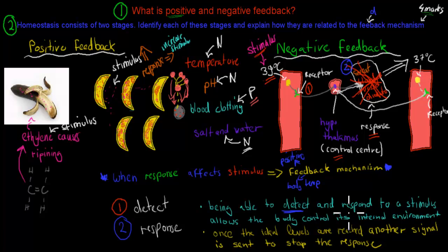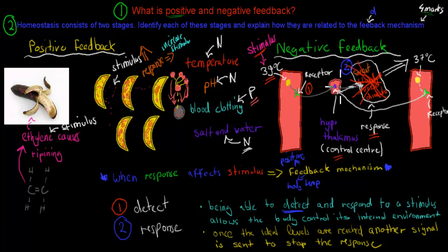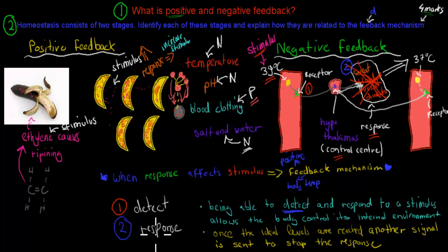You can also write that once the ideal levels are reached, another signal is sent to stop the response — the idea that once we're at 37 degrees Celsius, we send a signal to the hypothalamus to stop the response, because otherwise our temperature would drop too low and we'd have problems again. So those two — detection and response — and how they link to the feedback mechanism would allow us to fully answer that question.